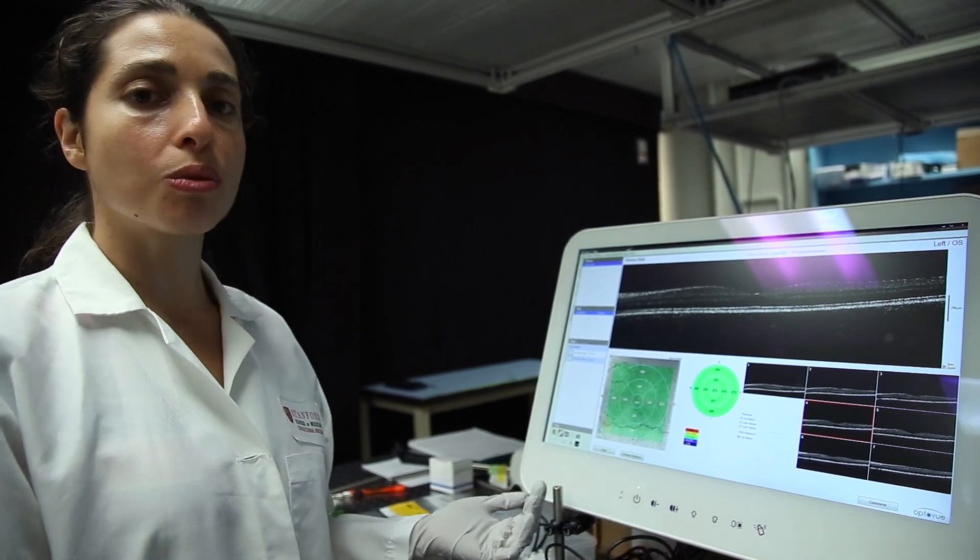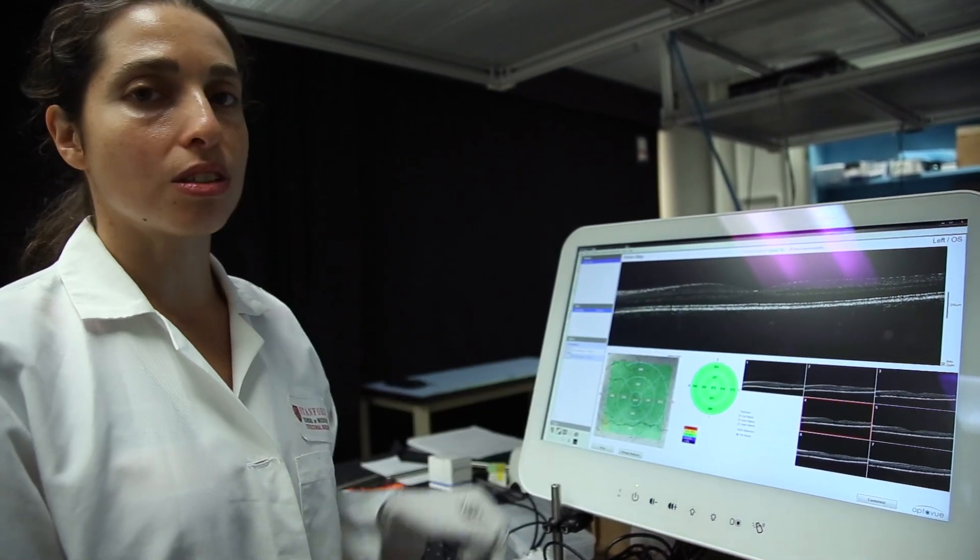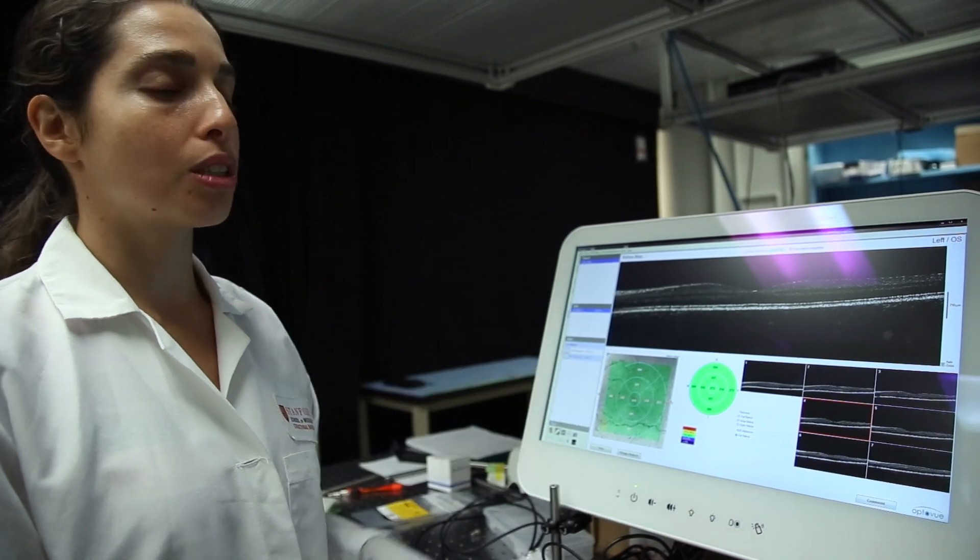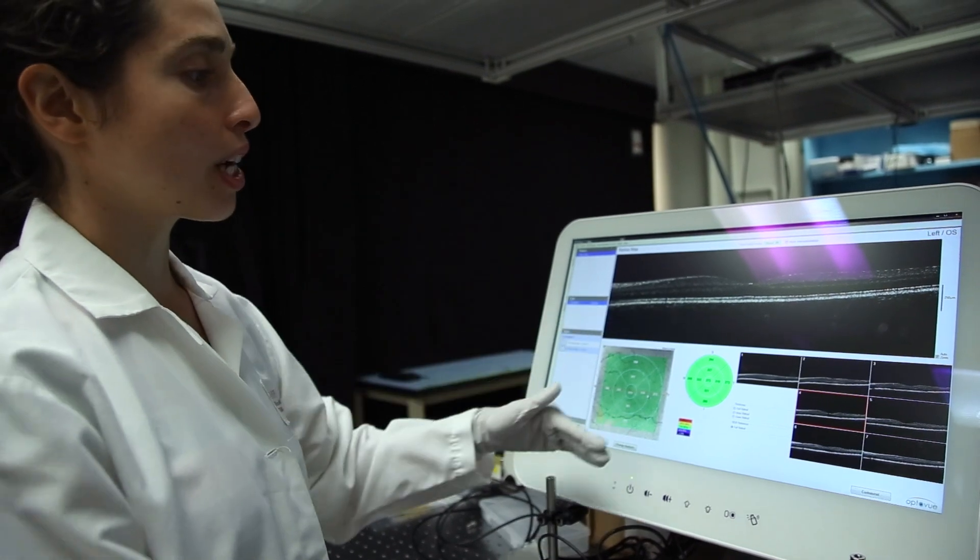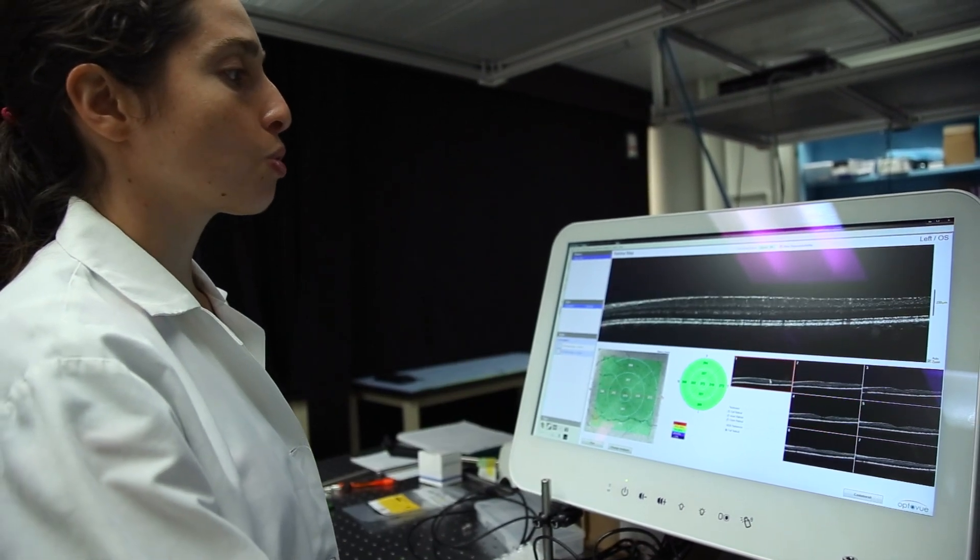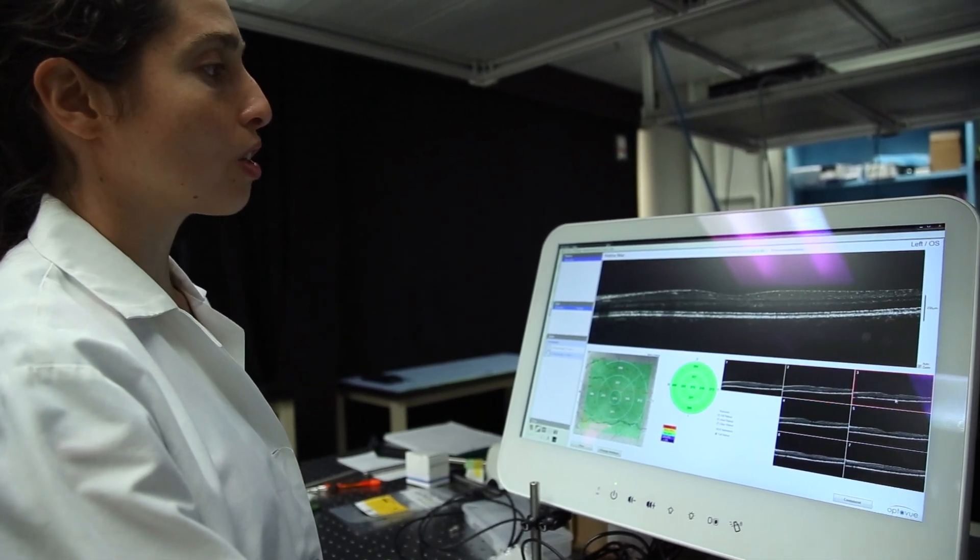When we look at people's retina, we mainly care about this high density region. This is where age-related macular degeneration develops. What I just acquired is several scans, so we can get sort of a retina map, several scans along the retina.